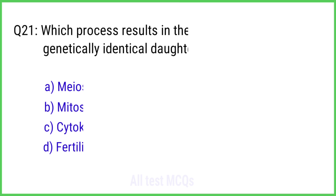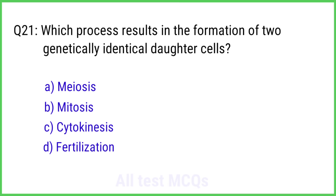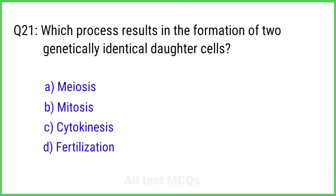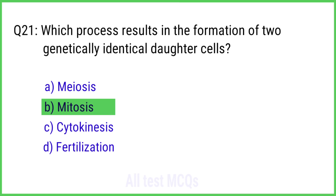Question No. 21. Which process results in the formation of two genetically identical daughter cells? The right answer is Option B: Mitosis.